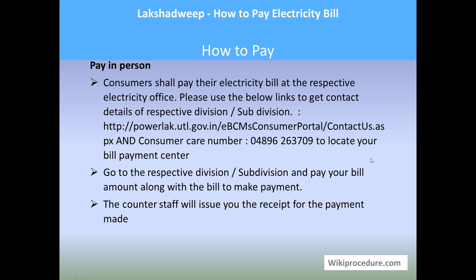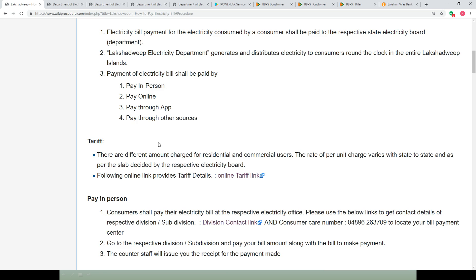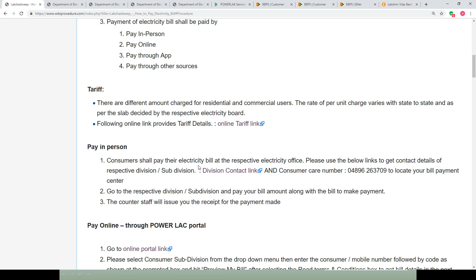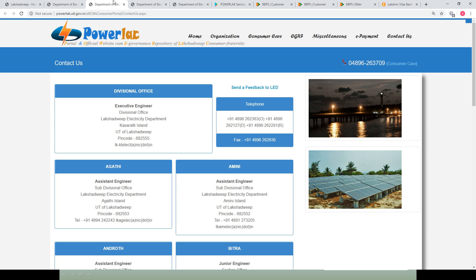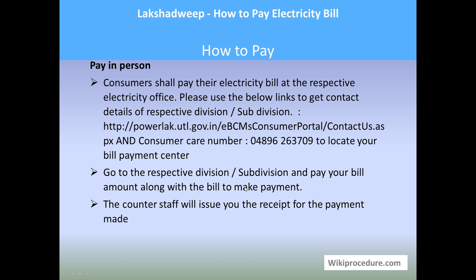To pay in person: the consumer shall pay their electricity bill at the respective electricity office using the electricity bill and other required details. In our page under 'Pay in Person' we have given the details. To find the contact for the division office, you can use the division contact link provided here, which will take you to the 'Contact Us' page of the respective portal to get the address of your nearest division office.